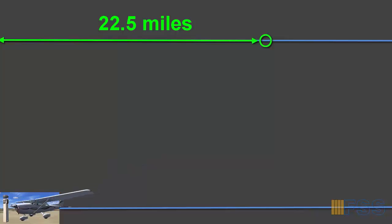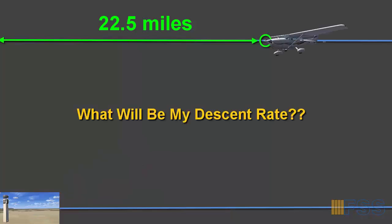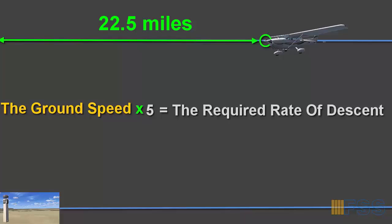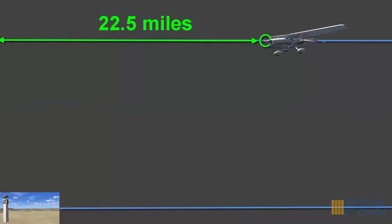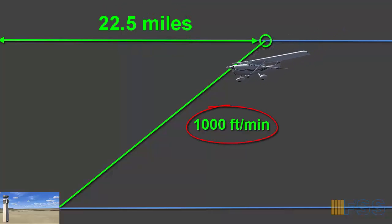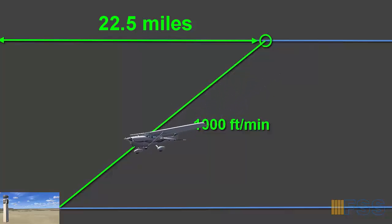You might ask: at what rate of descent should I perform this descent? The formula is simple: multiply your ground speed by 5 to get the required rate of descent. For example, if we are flying at 200 knots ground speed, multiplying 200 by 5 gives us 1,000 feet per minute. So in this example, we start our descent at least 22.5 miles from destination at 1,000 feet per minute. That completes this tutorial — thank you for watching, see you in the next video.